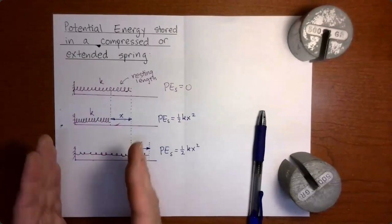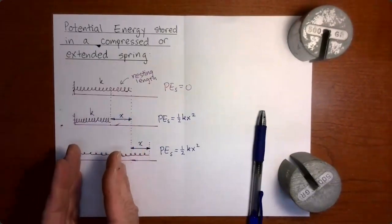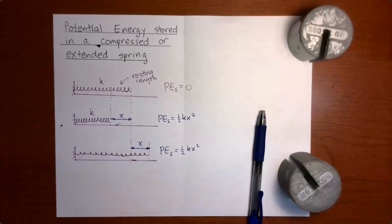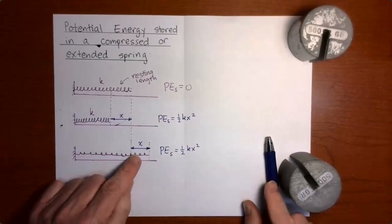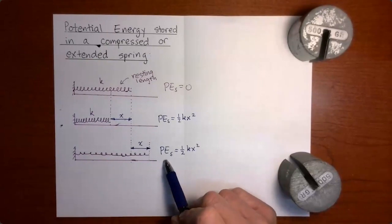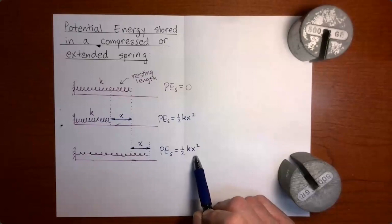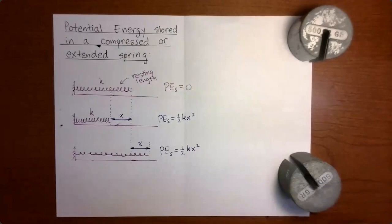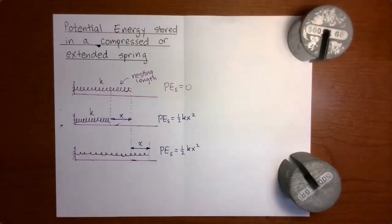On the other hand, if we take the resting spring and extend it through a distance x, then the potential energy stored in the extended spring is one half the spring constant multiplied by the square of the extension of the spring. Now I've shown you how to calculate the potential energy stored in compressed and extended springs. In the next couple of videos, we will be using these concepts to solve problems involving compressed or extended springs.